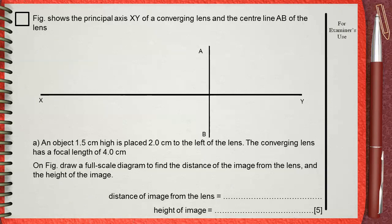Figure shows the principal axis XY of a converging lens and the center line AB of the lens. An object 1.5 centimeters high is placed 2 centimeters to the left of the lens. The converging lens has a focal length of 4 centimeters.